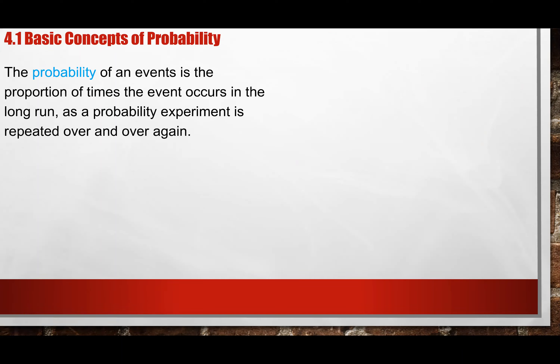Probability is just the chances of something happening. The formal definition is basically the proportion of the time that an event occurs in the long run.